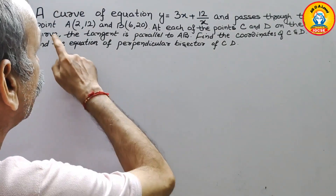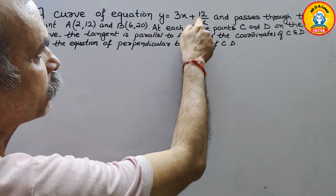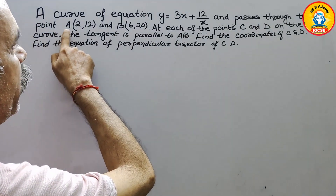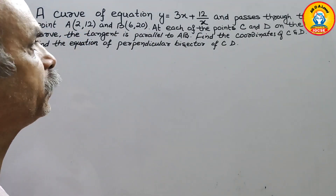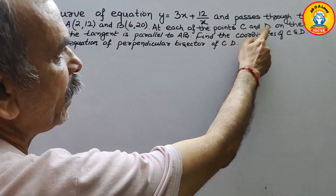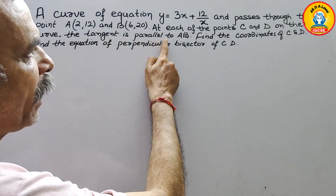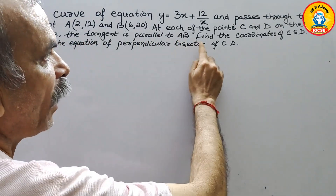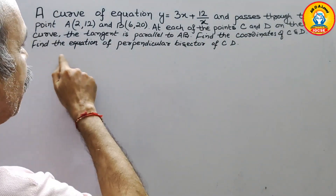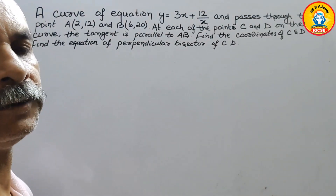Your question is: a curve with equation y = 3x + 12/x passes through the points A(2, 12) and B(6, 20). At each of the points C and D on the curve, the tangent is parallel to AB. Find the coordinates of C and D, and find the equation of the perpendicular bisector of CD.